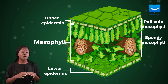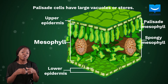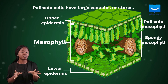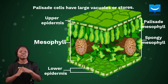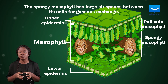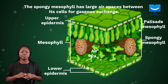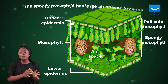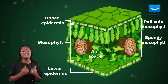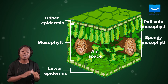The palisade cells also contain large vacuoles where they store the products of photosynthesis. The spongy mesophyll lies beneath the palisade mesophyll and it has large intercellular spaces or large air spaces between its cells, a lot like a sponge. These air spaces aid the efficient diffusion or movement of oxygen and carbon dioxide around the cells of the leaf.